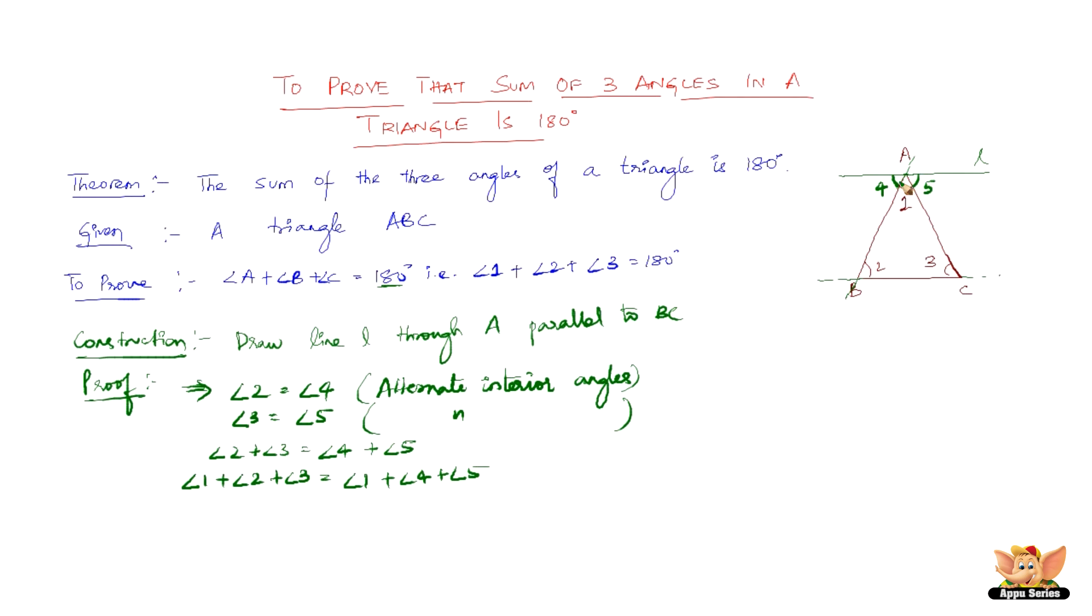When you add all the angles on a straight line, it equals 180 degrees. Therefore, angle 1 plus angle 2 plus angle 3 equals 180 degrees.